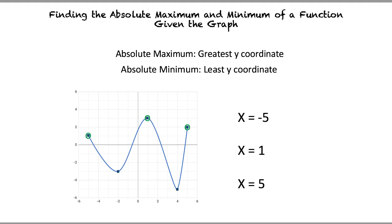Now we must determine which of these three points has the greatest y-value. The three y-values are y equals 1, y equals 3, and y equals 2. The greatest y-value is y equals 3 at x equals 1, so therefore the absolute maximum is at x equals 1.